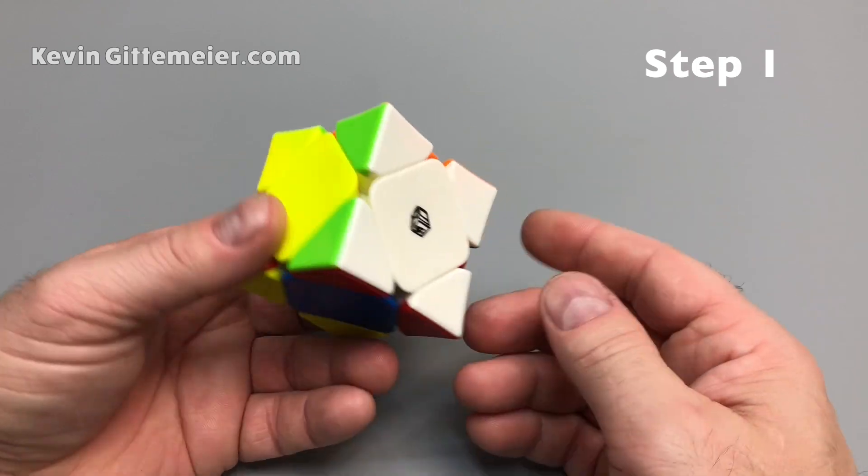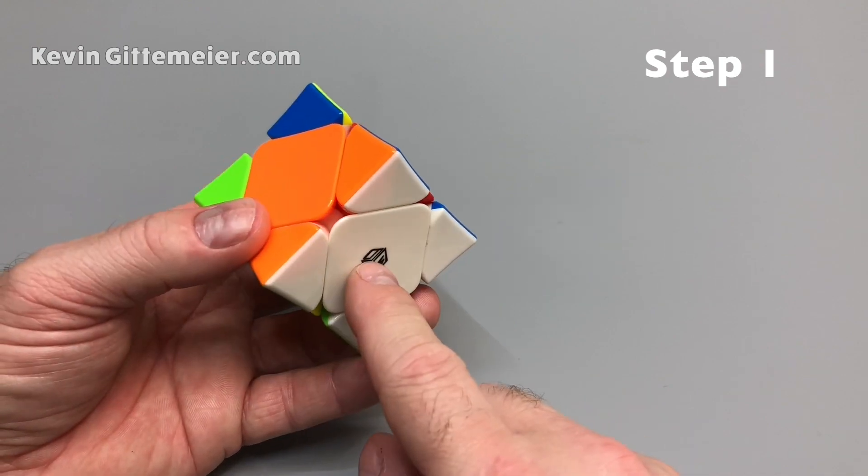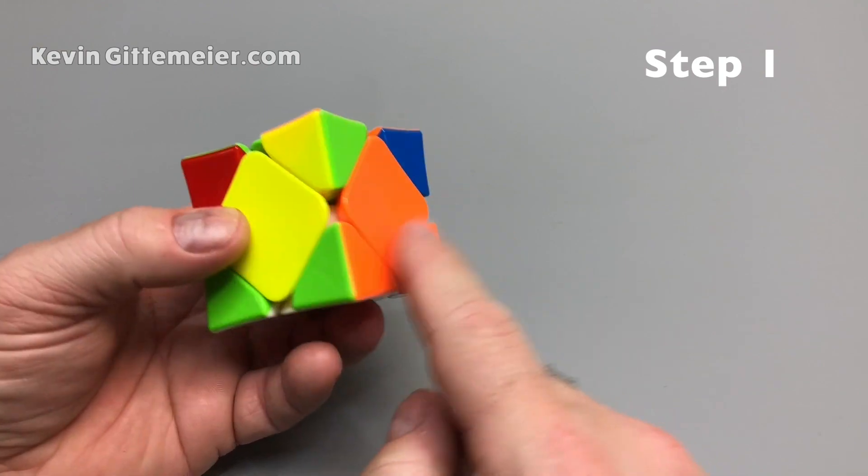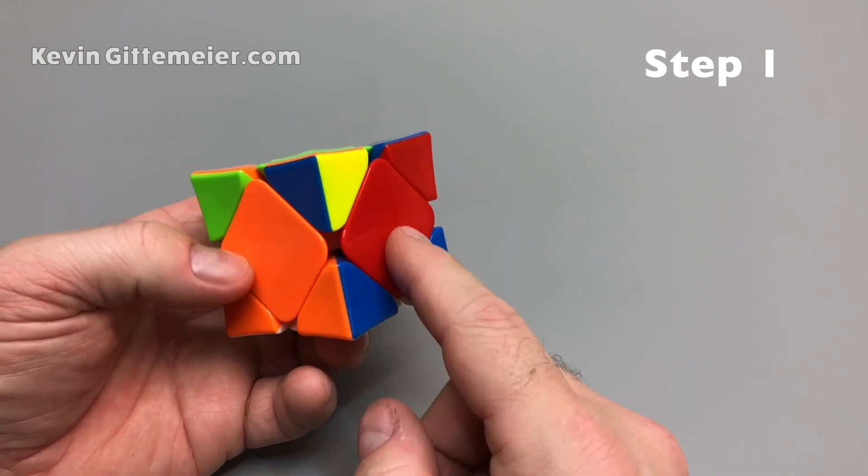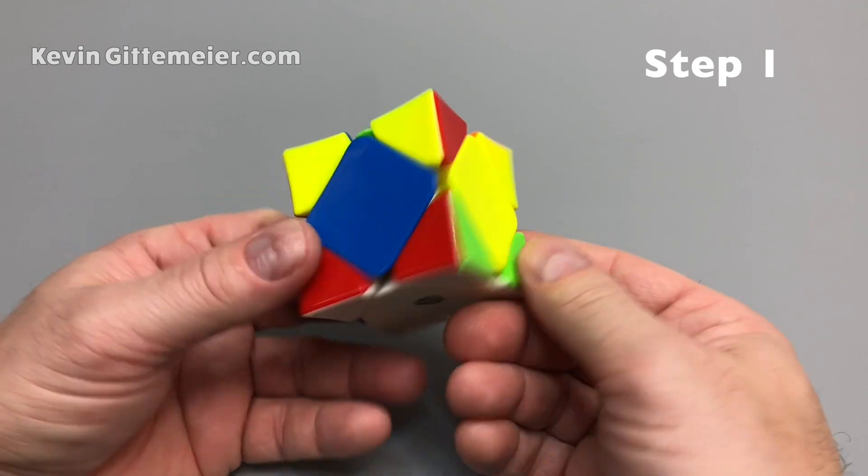Again, that'll take you a little bit of practice. But once you get the hang of it, it's pretty easy. So now this bottom layer is solved. So all of these have to match. Now notice they don't necessarily have to match the centers because these centers are not stationary like a Rubik's 3x3. They'll swap around. We'll get more to that later.